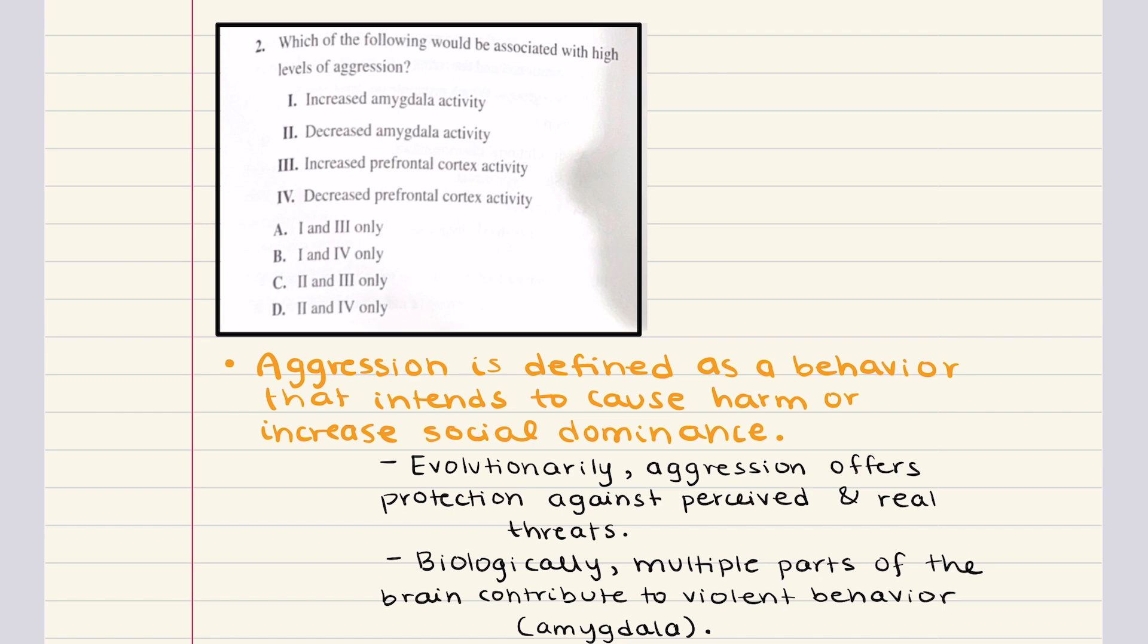So amygdala increases aggression. Prefrontal cortex controls aggression. And so if the problem is asking us what would be associated with high levels of aggression, increased amygdala activity makes sense because activity of the amygdala increases aggression. Now the other statement that makes sense is decreased prefrontal cortex because the prefrontal cortex should control aggression. And so a decrease in the activity of the prefrontal cortex would play into seeing high levels of aggression. And so here statements one and four make the most sense, which makes the correct answer for two, B. Wonderful.